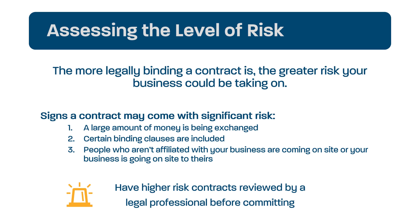People who aren't affiliated with your business are coming on site or your business is going on site to theirs. Whenever you are at someone else's location, they may be put in a position to accept responsibility if you are injured unless you agree in writing to something otherwise. This is why you have liability insurance. If a child is injured in your home and a family suspects you are responsible, your liability insurance likely protects you from having to pay for medical or legal costs. Some contracts require proof of liability insurance or may ask you to add another business as an additional insured entity on your liability insurance.